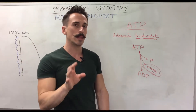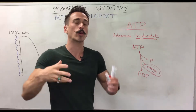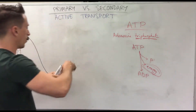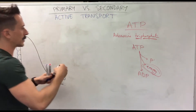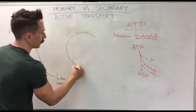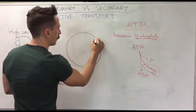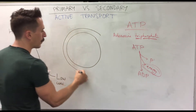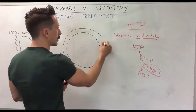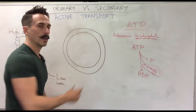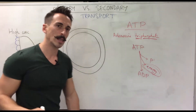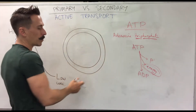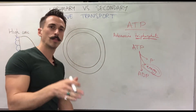Let's apply this to a cell. If I draw up a simple cell of the body, remember the cells of your body have a phospholipid bilayer — a membrane made up of phospholipids, which are phosphates with lipids.